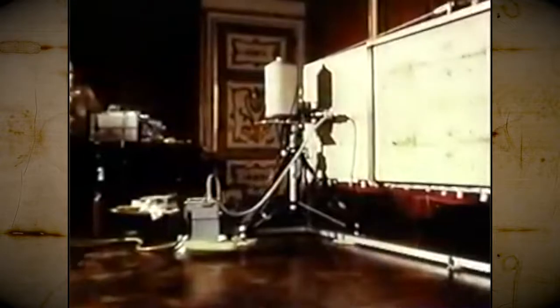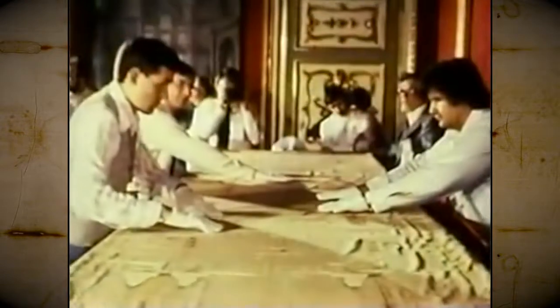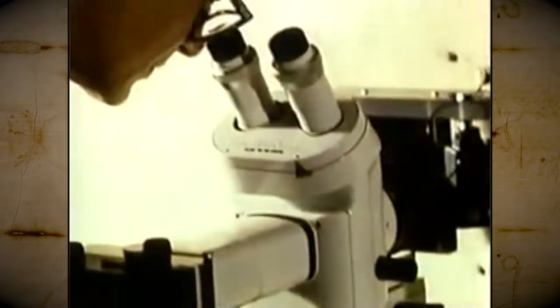Of particular interest was whether or not the supposed blood stains on the shroud were, in fact, blood. A popular theory was that the shroud was just a clever painting. These scientists had the knowledge and the equipment to prove or disprove this idea once and for all.